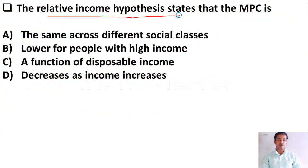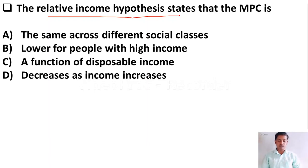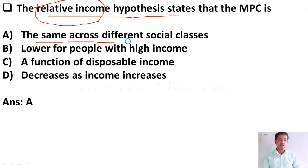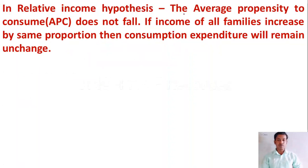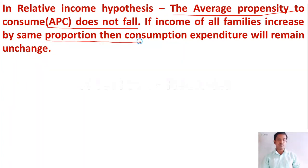The next question: the relative income hypothesis states that the MPC is — Option A: the same across different social classes; Option B: lower for people with high income; Option C: a function of disposable income; Option D: decreases as income increases. The right answer is Option A. In the relative income hypothesis, MPC remains the same across different social classes. The average propensity to consume (APC) does not fall with an increase in income. If the income of all families increases in the same proportion, then consumption expenditure will remain unchanged.